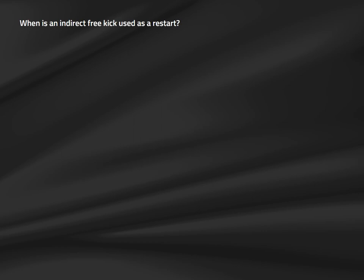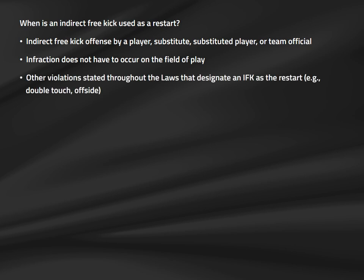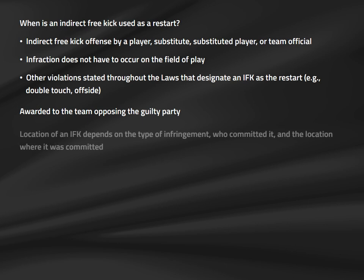Law 13 also covers indirect free kicks, the seventh restart. An indirect free kick is awarded when a player, substitute, substituted player, or team official commits one of the eight indirect free kick infractions defined in Law 12. Not all indirect free kick infractions must occur on the field, and none involve contact with an opposing player. Other infringements such as double touches and offside can also result in an indirect free kick. The location of the indirect free kick depends on the type of infringement, the individual who committed it, and where they were.